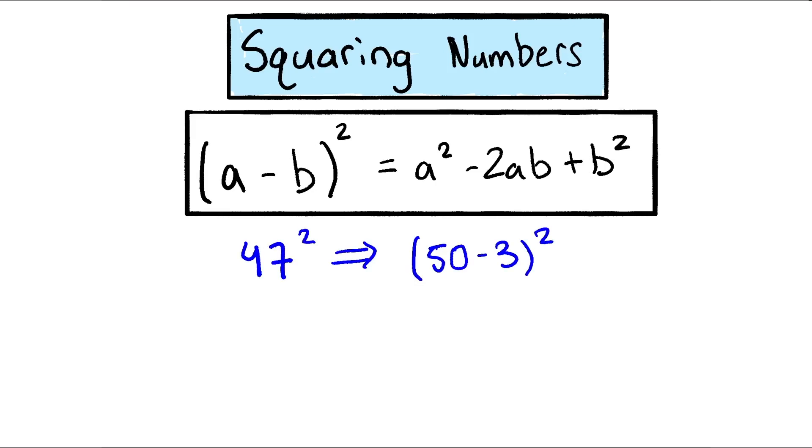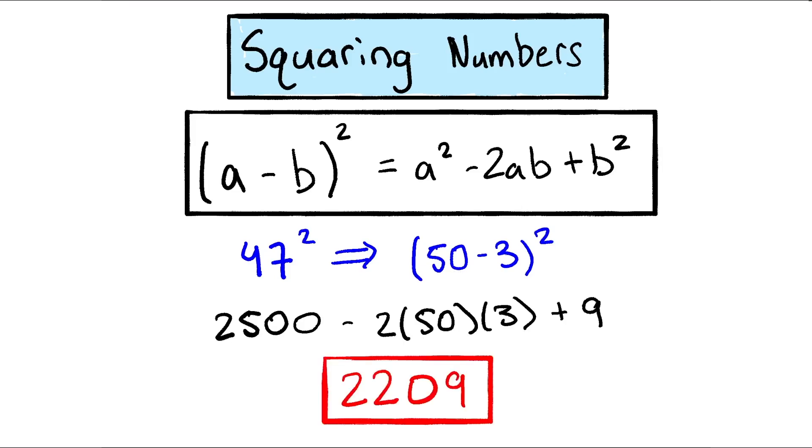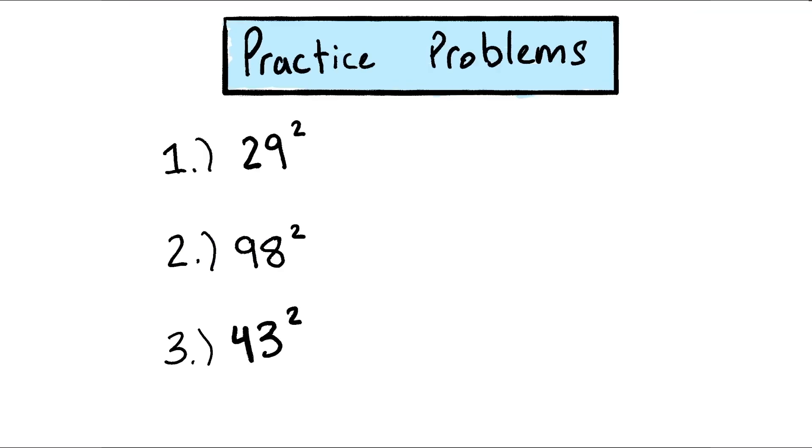So let's take us through this one example. So we know 47 squared equals 50 minus 3 squared. And then if we use our equation above, that gives us 2,500, which is 50 squared, minus 2 times 50 times 3, which is the minus 2ab part. And then we add 9, which is the b squared part. So if we add that together, we get 2,500 minus, this is 300 right here, plus 9, that's 2,209. That's a lot easier to calculate in your head than just 47 squared.